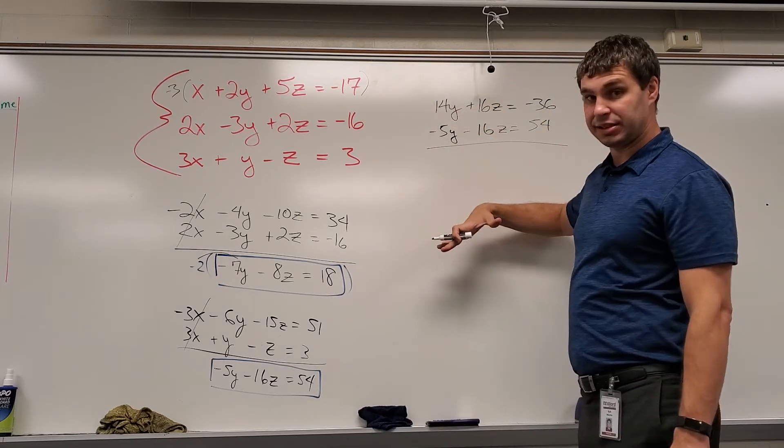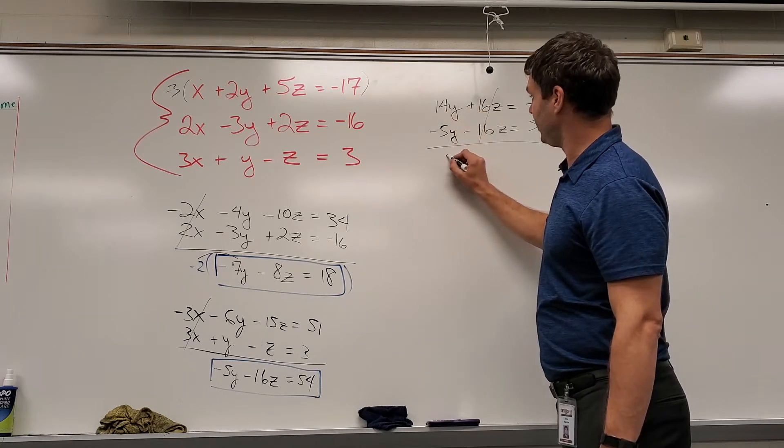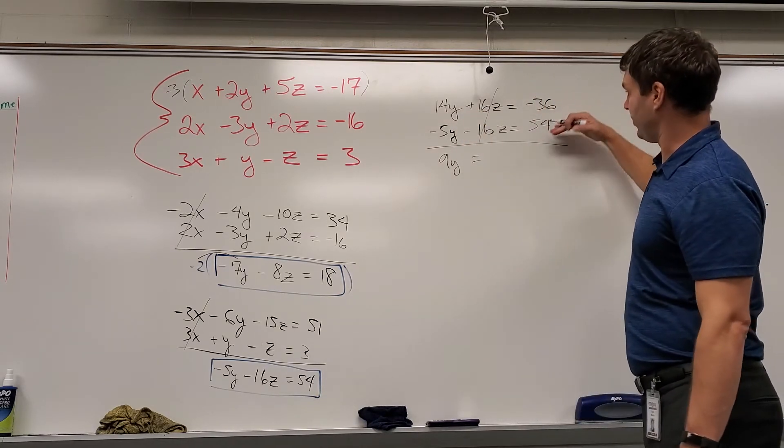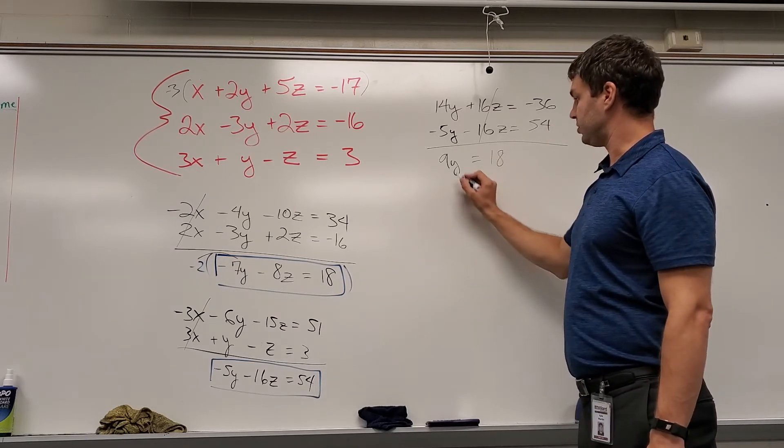Okay, so now if I add these together, the 16z's will eliminate, leave me with 9y and negative 36 plus 54 or 54 minus 36. Maybe think of it that way. That's 18. And so y would have to be 2.